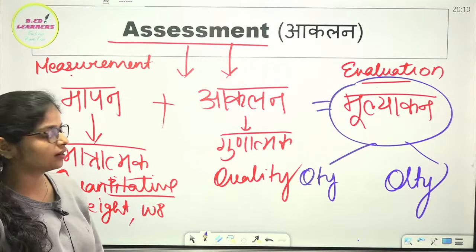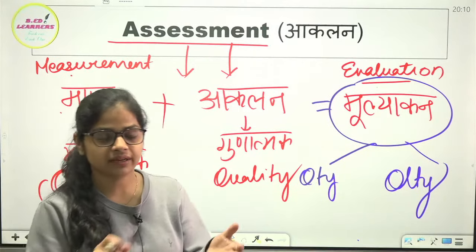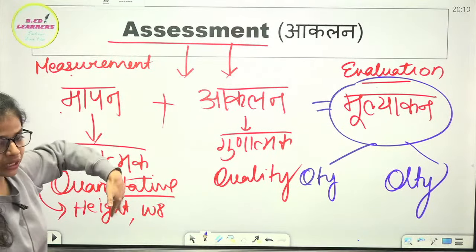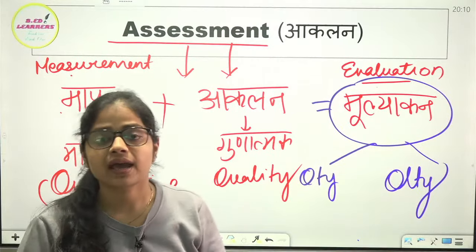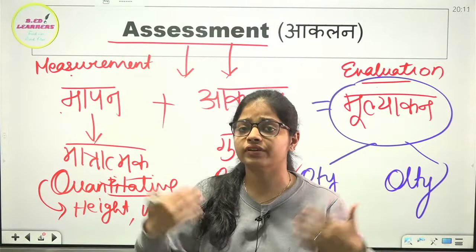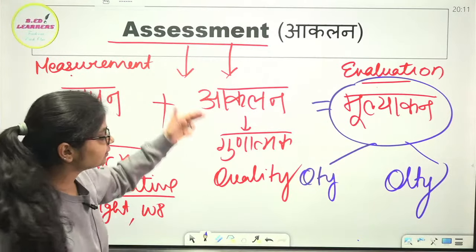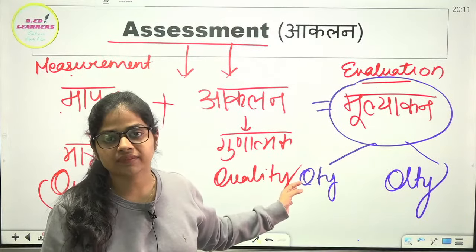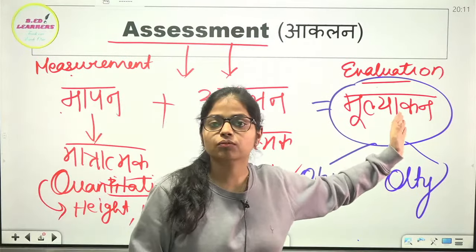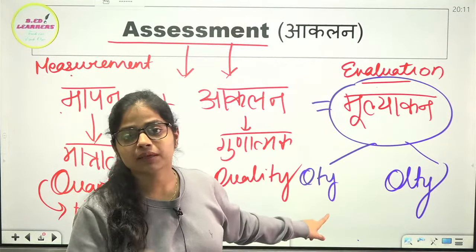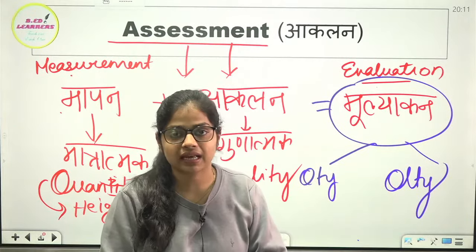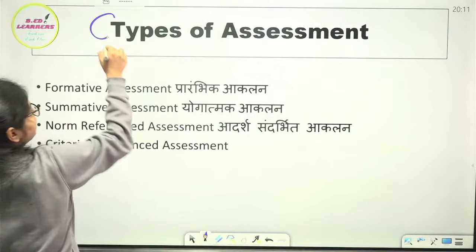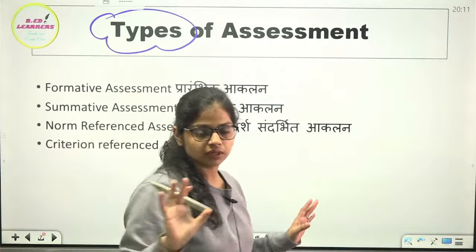All information — the Aspiring Teachers app link, and the phone number — are given in the description. You can ask me there. So briefly: in this subject we will study Maapan (measurement — only quantitative, like weight, height, size), Aaklan (tells the quality of the child — we will study tools to check a child's good qualities), and when we combine both, we get Muliankan. Today's class is a demo — consider it a short introduction.